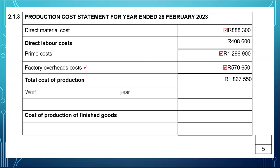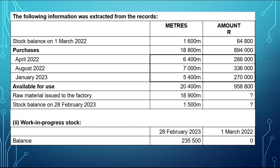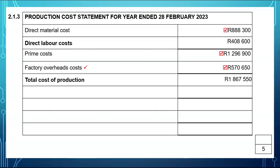Then you have to add work in progress at the beginning of the financial year. That will require me to go back to my information booklet and look for work in progress. You will notice that work in progress at the beginning of the year was zero, so we will therefore put zero.